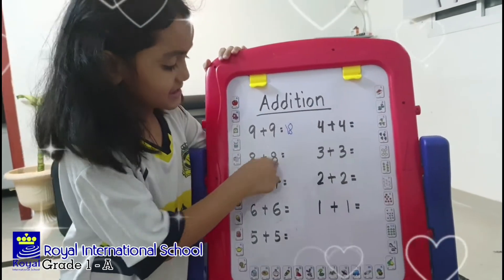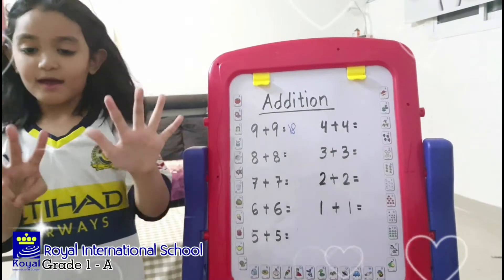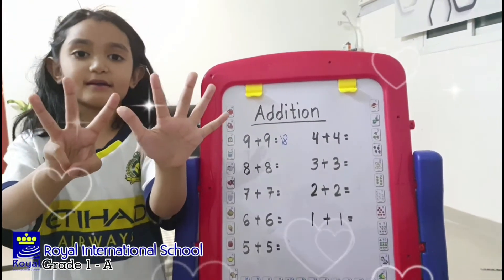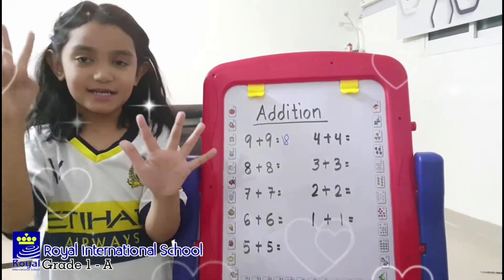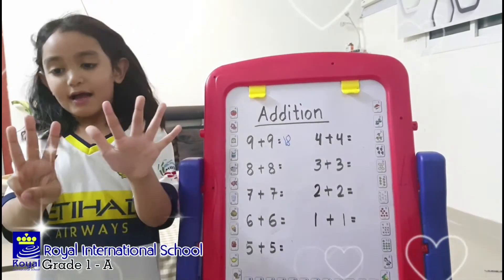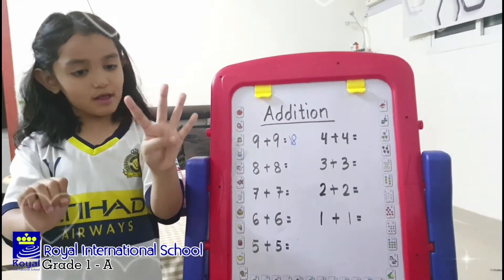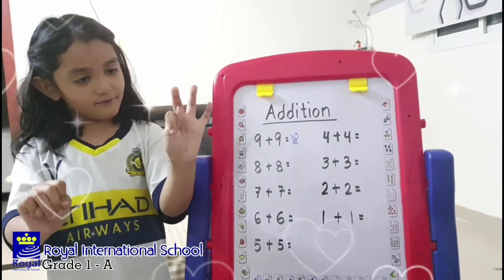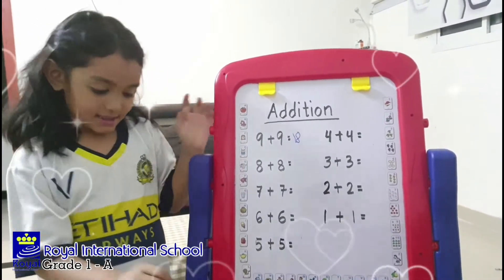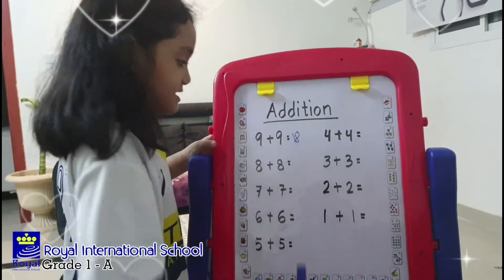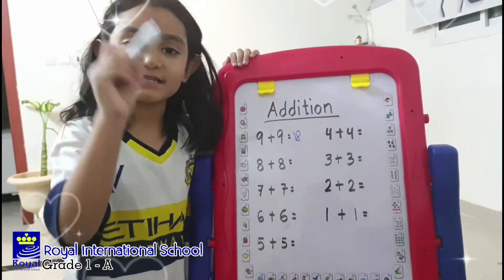8 plus 8. I have 8 fingers and 8 in my mind. After 8: 9, 10, 11, 12, 13, 14, 15, 16. So I will write 16. How to write 16? 1 and 6.